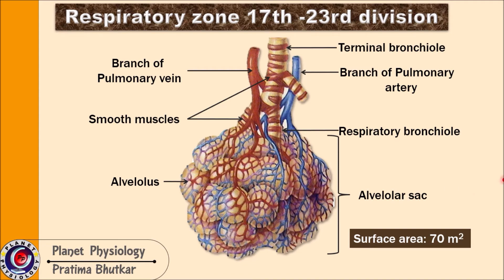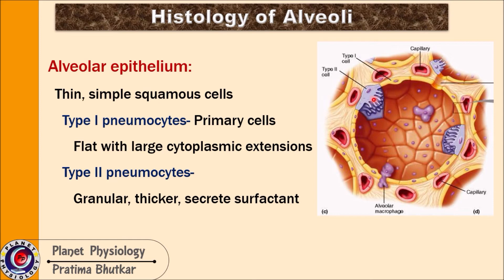Shown here is a single alveolus cut open. Epithelial cells lining the alveoli are called pneumocytes — they are thin and simple squamous cells. There are two types: type 1 and type 2. Type 1 pneumocytes are the main cells, constituting about 90% of the alveolar epithelium; they are flat cells and therefore gas exchange can take place easily across them, shown here in yellow. Type 2 pneumocytes, shown in blue, are slightly thicker, granular in nature, and secrete surfactant; they constitute about 10% of the alveolar epithelial cells.